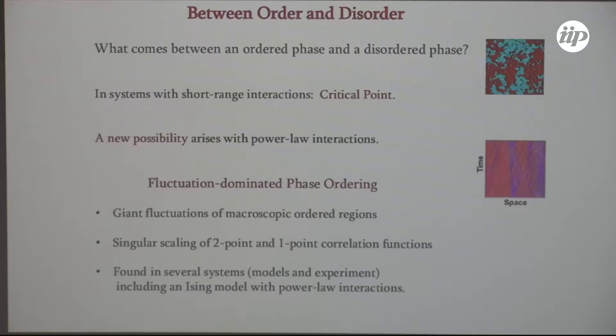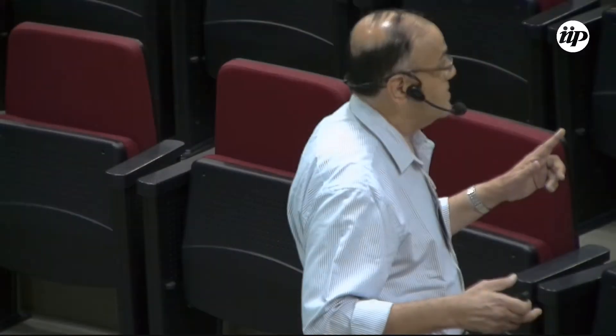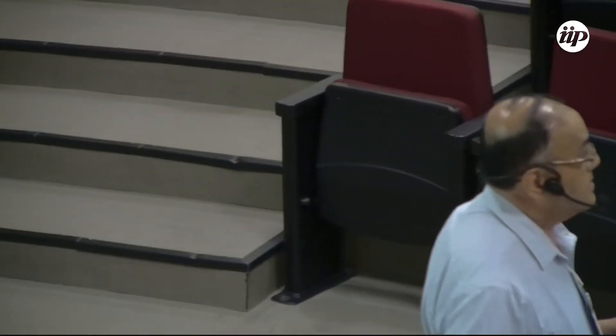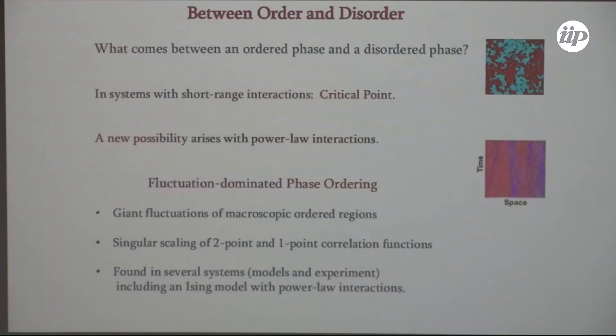Qualitatively, what it has is giant fluctuations. Fluctuations that do not dampen down in the thermodynamic limit of ordered regions which are macroscopic. Manifestation is that if you look at the two-point correlation function, it's a scaling function of which I'll tell you about. But the scaling function itself is singular. This is what we will see. And as I said, this is found in several systems. The Ising model with power laws is something that I'll come to, but I'll argue that this actually happens a little more generically. And in fact, for the next few minutes, I'll talk about other systems in which this sort of order arises.